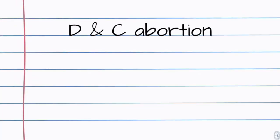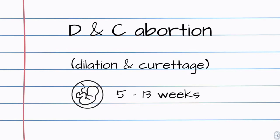In this video, we will discuss D and C abortions. This stands for dilation and curettage and can be done from 5 to 13 weeks.